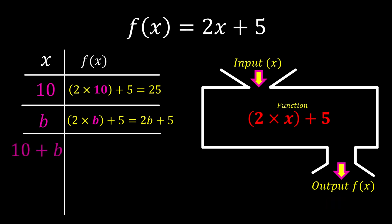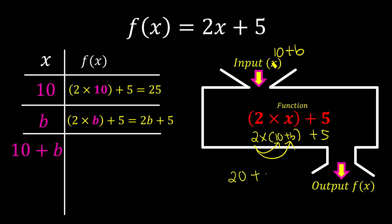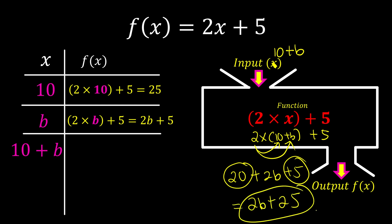But what if you ask: is it possible to put an expression inside? Yes, it's possible. If we put 10 plus b, we take it in and process it. So 2 times (10 + b) plus 5. Remember how to expand — just multiply everything: 2 times 10 is 20, 2 times b is 2b, plus 5. Then combine like terms: numbers with numbers, letters with letters — we get 2b + 25 as the final output.